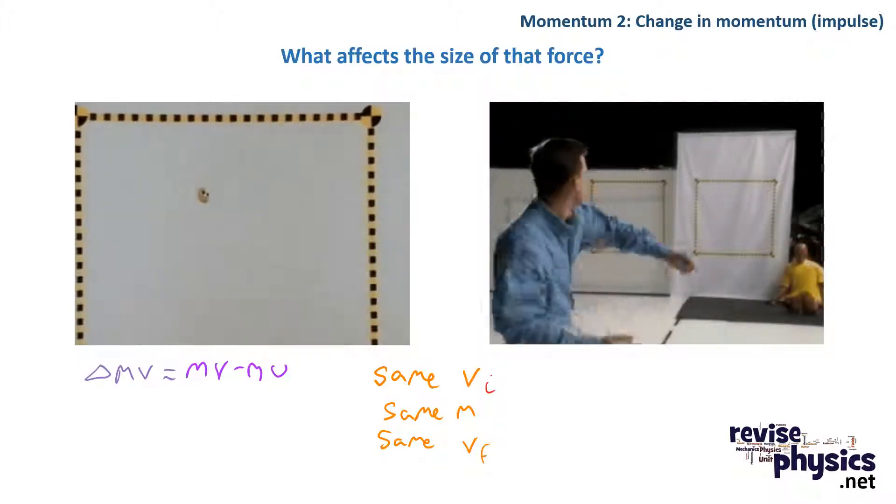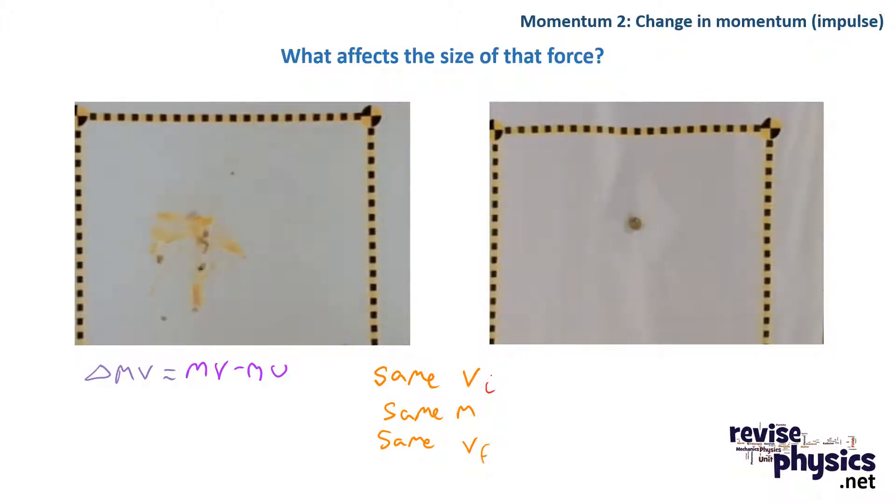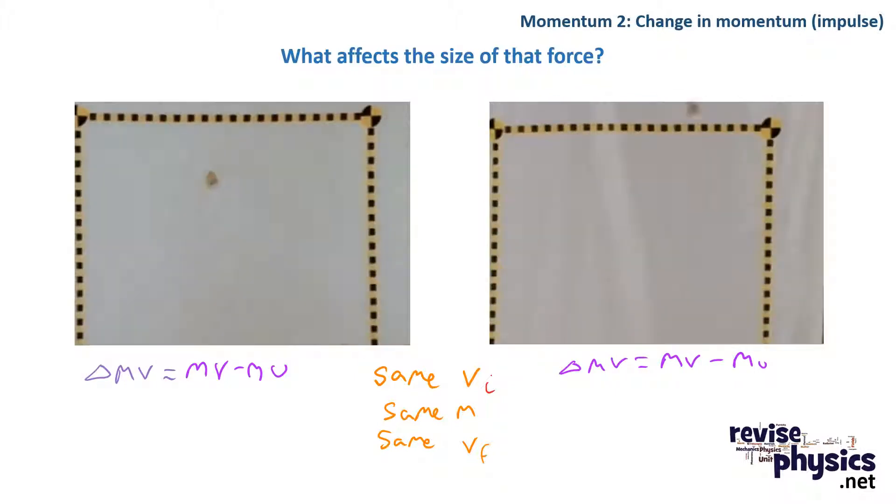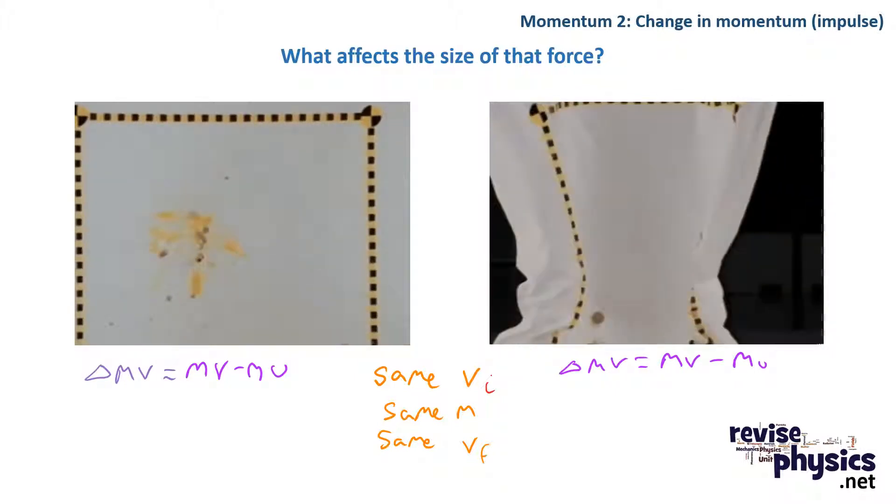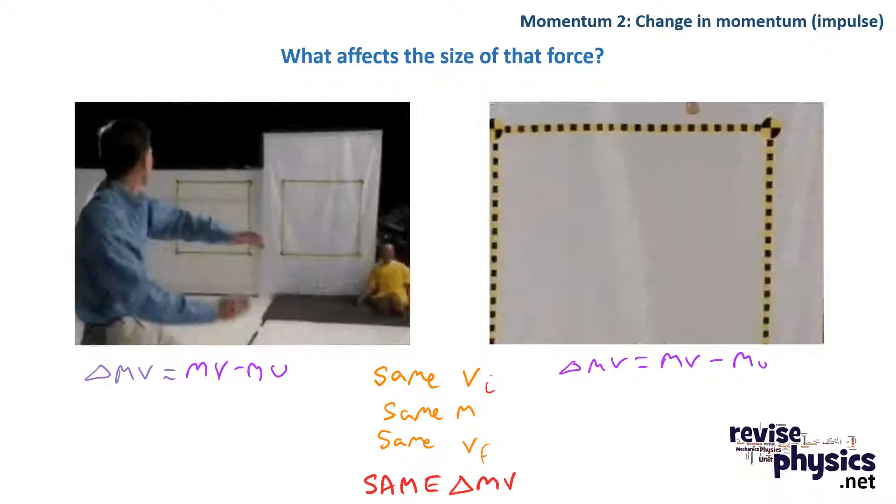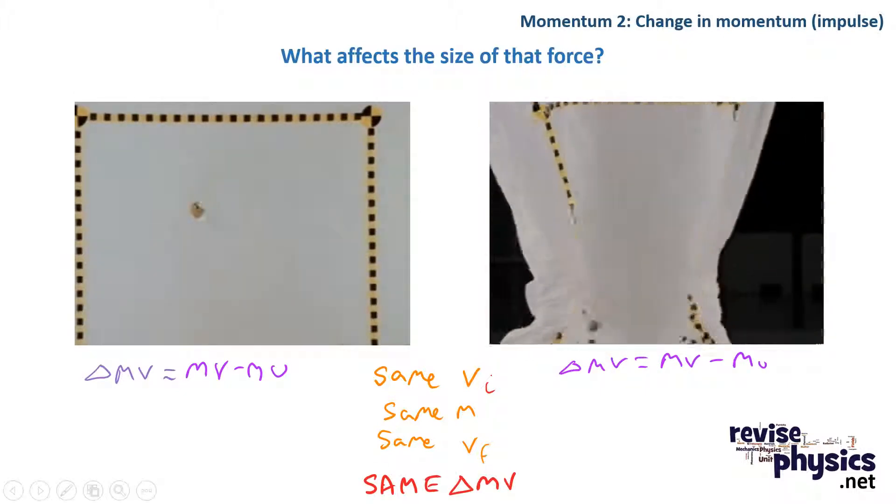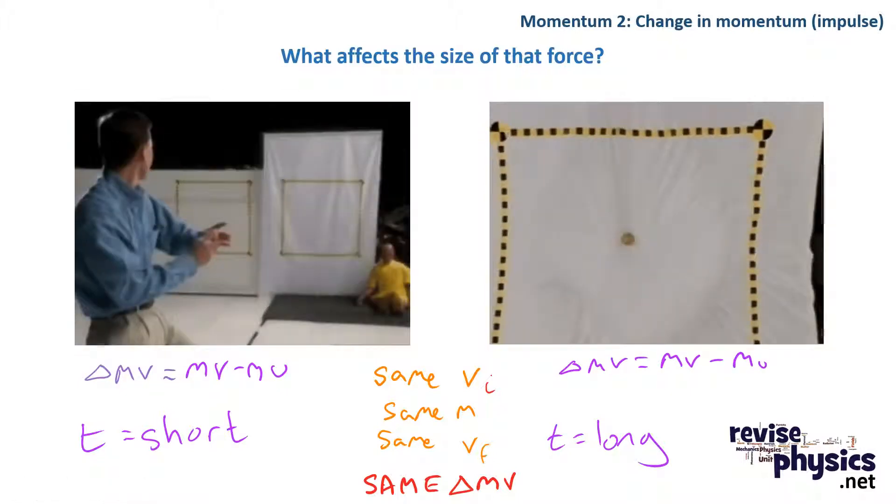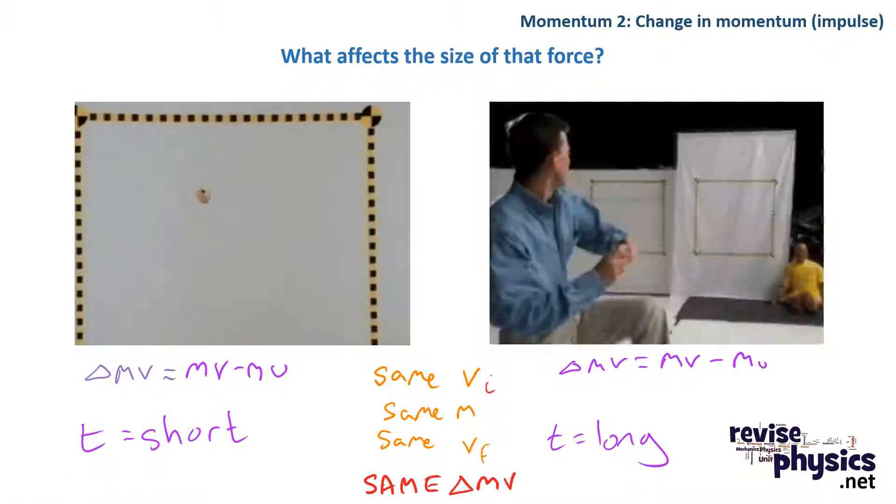So that means that the change in momentum of the egg hitting the wall is the same as the change in momentum of the egg hitting the sheet. But for some reason, the one hitting the sheet doesn't break. They have to have the same change in momentum, and the only thing that's different between them is the time over which you get that change. And that's the key factor here.